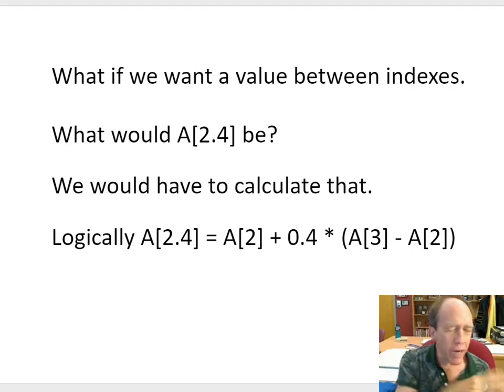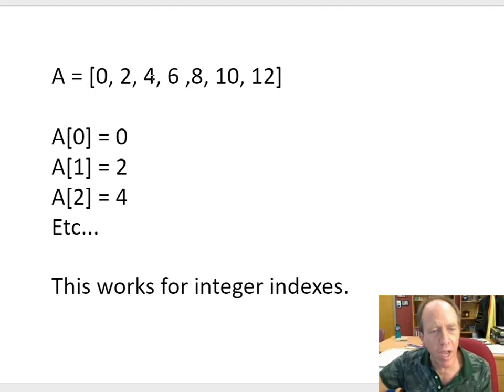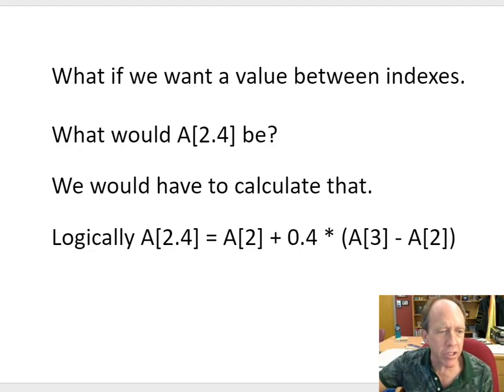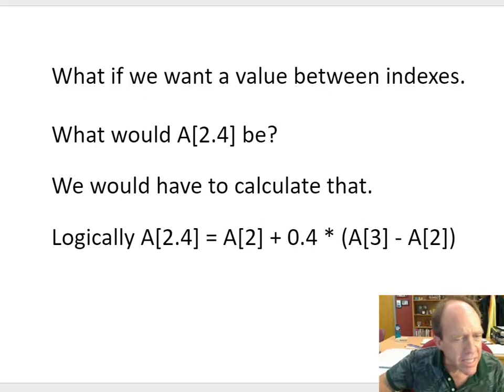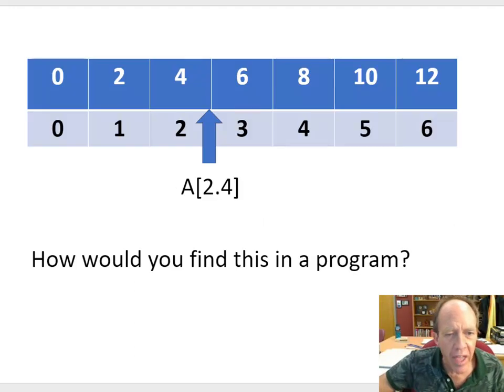Well, if your engineering mind is on and you're thinking, you're going to think, oh, well that's just going to be a number between 4 and 6. Yeah, we can do that. So how would we do that? Well, if we were really thinking logically, we'd say, you know what, A of 2.4 is whatever A of 2 was, plus 0.4 times whatever A of 3 is, minus what A of 2 is.